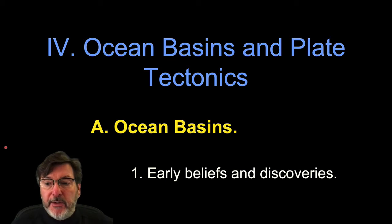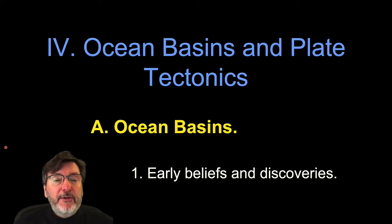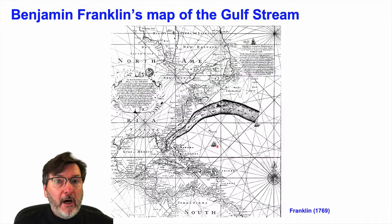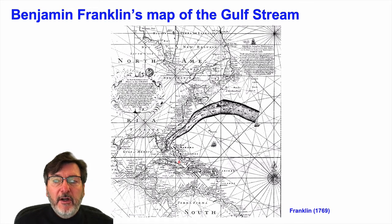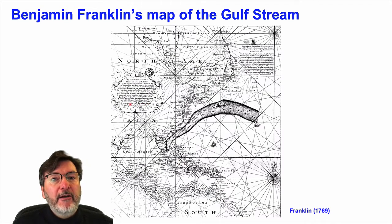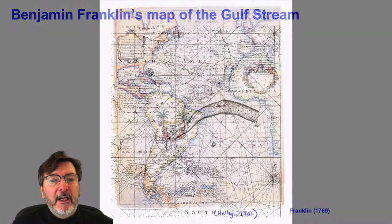Let's start with ocean basins and early beliefs and discoveries, and we can start again with your friend Benjamin Franklin, who was the first person to actually map or plot an ocean current on a map. Here's the Gulf Stream, and this was used to help understand how to get back and forth between North America and Europe.